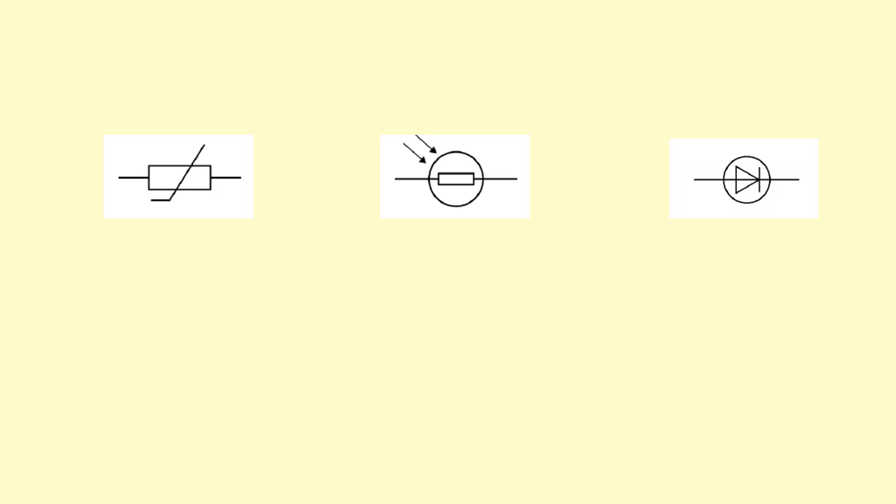Three components that you need to know about which use semiconductors. The first one is the NTC thermistor. NTC stands for negative temperature coefficient, and that simply means as the temperature goes up, the resistance goes down. As temperature goes up, resistance goes down, which is very different from metal where the temperature goes up, the resistance also goes up.